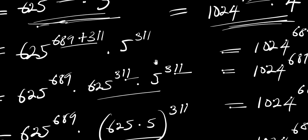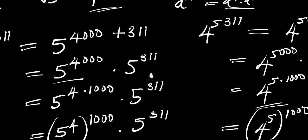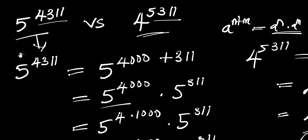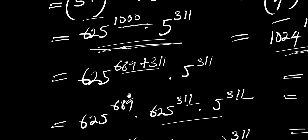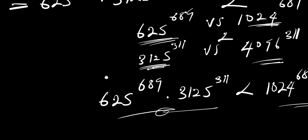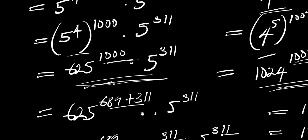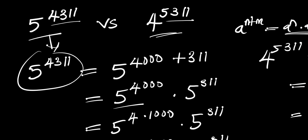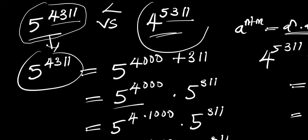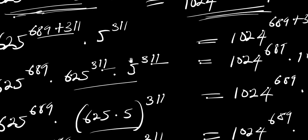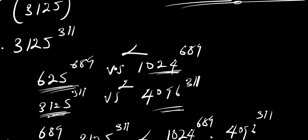Since the first expression came from 5^4311 and the second from 4^5311, we can conclude that 5^4311 is less than 4^5311. That is it for this video. I believe you enjoyed the class — please don't forget to subscribe and share this video with your friends. Thank you and goodbye!